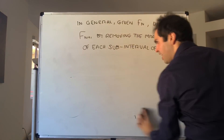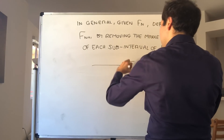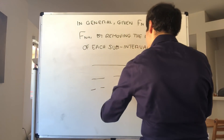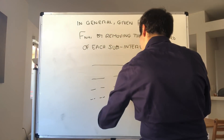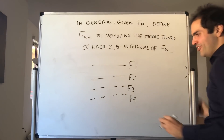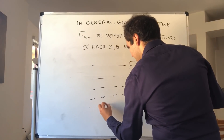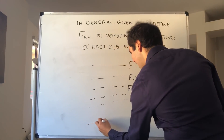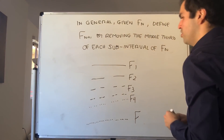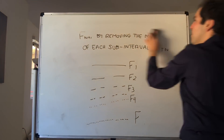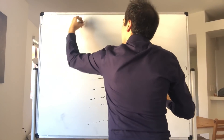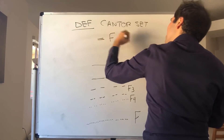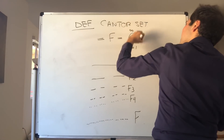So you get this nice hierarchy of sets: F1, then F2, then F3, then F4, and so on. Then what we want to take is just the intersection. F, which is called the Cantor set, is defined to be the intersection from n=1 to infinity of Fn. The rest of today's video is just stating a couple of neat properties of the Cantor set.